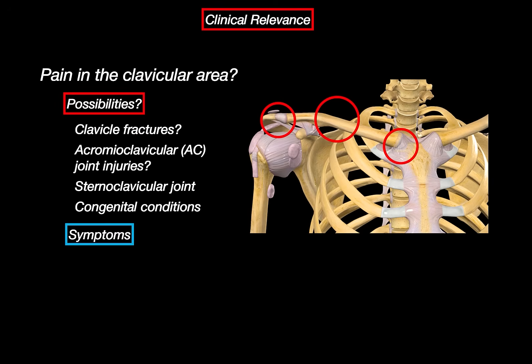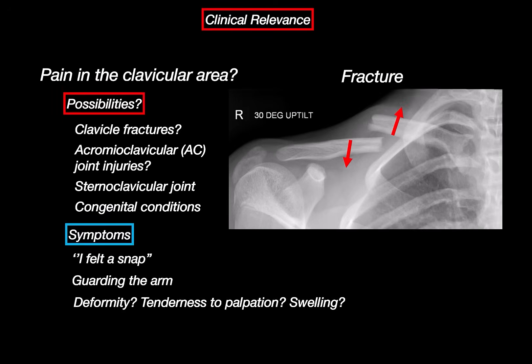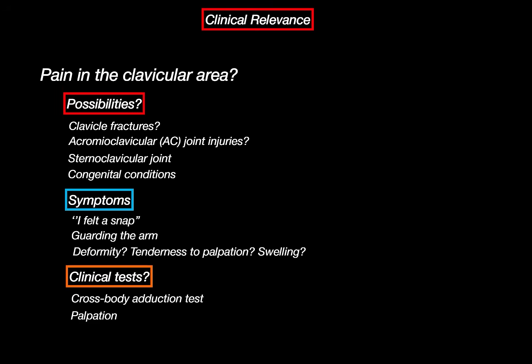What clinical signs do we look for? The patient might report a pop or crack during trauma, or they will guard the arm holding it in place. Look for deformity, tenderness to palpation, or swelling along the bone. If it's a fracture, often the medial end is pulled upwards by the sternocleidomastoid while the lateral end drops due to gravity and muscle pull — quite dramatic. For AC joint problems, we use the cross-body adduction test; pain means positive. Palpation alone might tell you if it's a fracture. But always check for neurovascular signs — radial pulse, cap refill, sensory deficits — especially if there's suspicion of posterior dislocation or severe trauma.